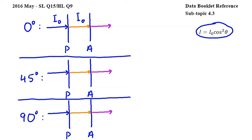Let's substitute into this equation. The intensity of the light entering A is I0, and the angle between the polarization axes of P and A at this position is 90 degrees, because the polarization axis of P is horizontal while the polarization axis of A is vertical. So we can write cosine squared 90 degrees. Since cosine 90 is 0, cosine squared 90 is also 0, and I0 times 0 equals 0, which means that the intensity of the light emerging from A is 0.